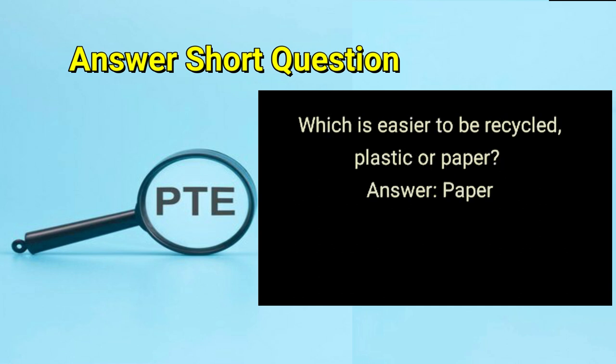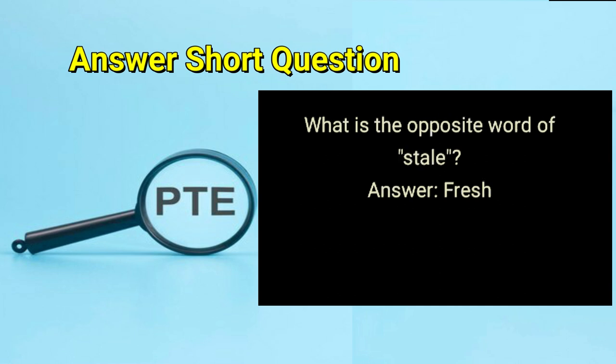Which is easier to be recycled — plastic or paper? Answer: paper. What is the opposite word of stale? Answer: fresh.